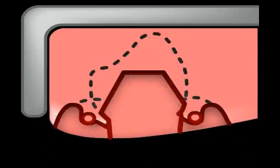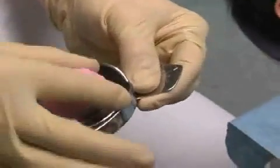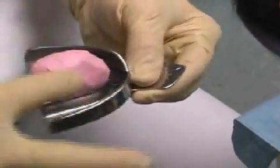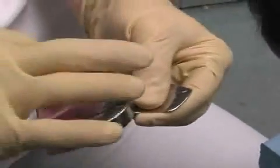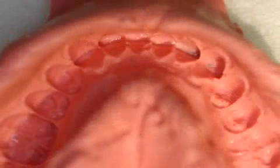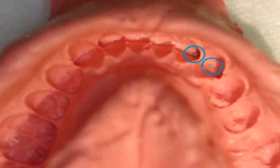Only in this way will a technician obtain precise impression margins. A pre-impression — the pink impression material in the image — prevents the teeth from touching the impression tray. This is called push-through. If the impression shimmers through the metallic tray, the impression must be repeated because of push-through.